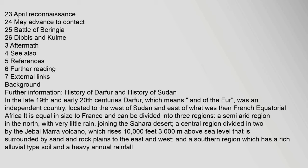Darfur, which means Land of the Fur, was an independent country located to the west of Sudan and east of what was then French Equatorial Africa. It is equal in size to France and can be divided into three regions: a semi-arid region in the north with very little rain joining the Sahara Desert, a central region divided in two by the Jebel Mara volcano, which rises 10,000 feet (3,000 meters).